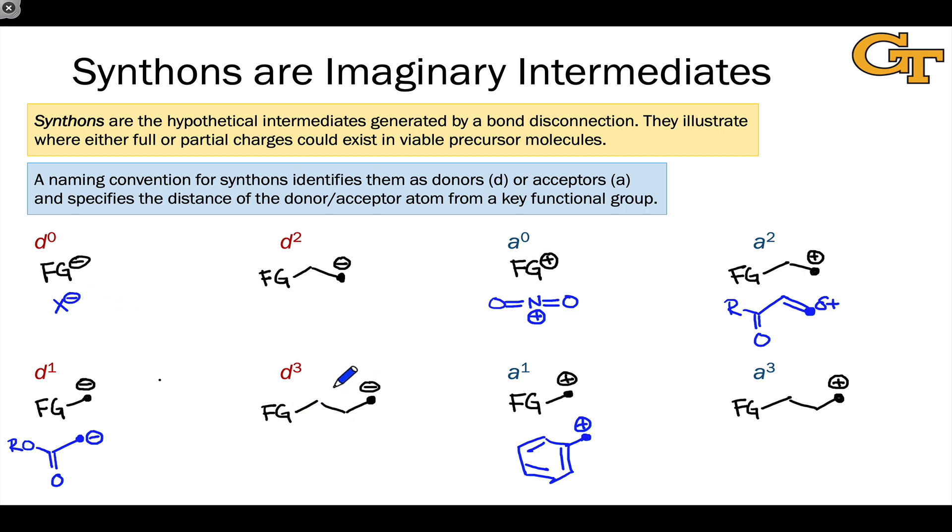A good example of a D3 synthon is something called a vinilogous enolate. Let's imagine we're working with an ester again, CO2R. If that ester is linked through a double bond to a distant carbon, it's possible to develop negative charge here and generate an enolate that is stabilized via delocalization, via resonance. It's called vinilogous because there's an alkene or a vinyl group between the anionic center and the functional group. A good example of a D2 synthon could be something like a trifluoromethyl group linked to a carbanion where that trifluoromethyl group is stabilizing the negative charge by induction.